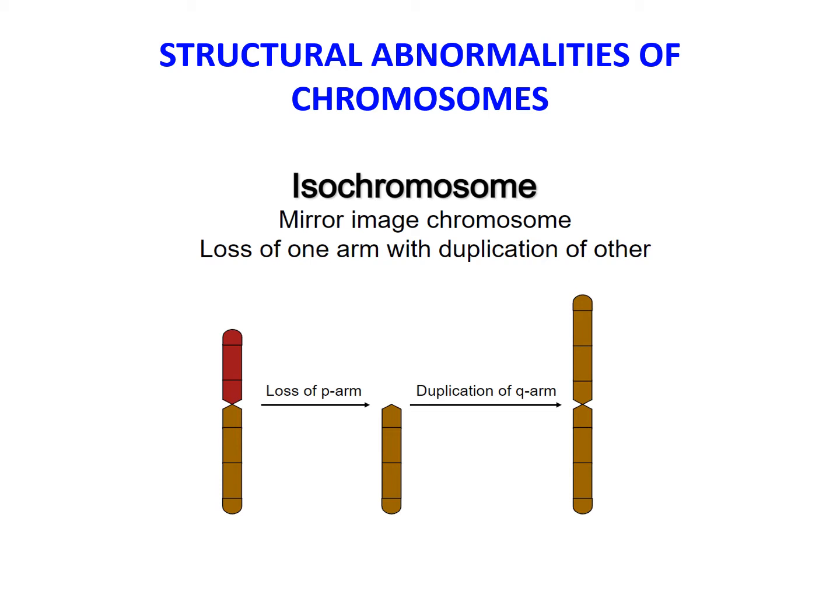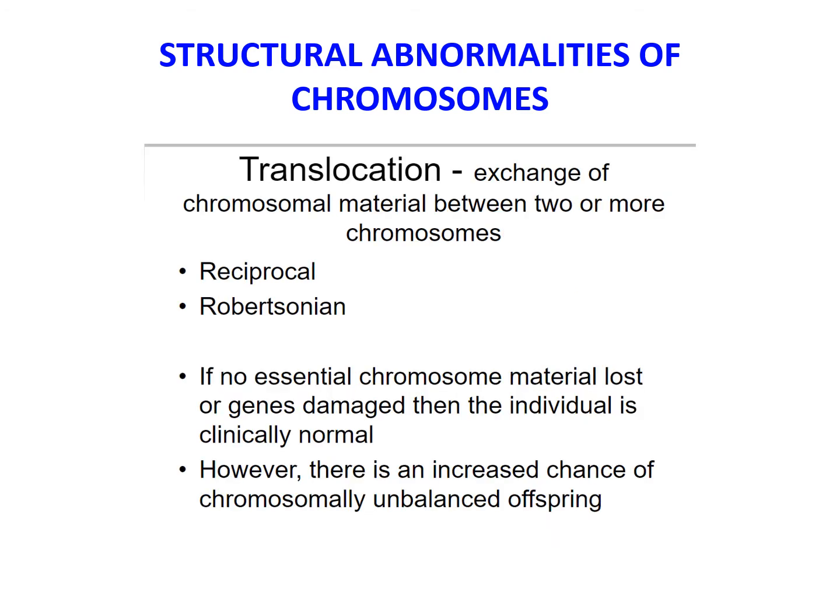Isochromosome formation results when one arm of a chromosome is lost and the remaining arm is duplicated, resulting in a chromosome consisting of two short arms only or two long arms. An isochromosome has morphologically identical genetic information in both arms. The most common isochromosome present in live births involves the long arm of the X chromosome. Translocation is the exchange of chromosomal material between two or more chromosomes — a segment of one chromosome is transferred to another. There are two types: reciprocal and Robertsonian.